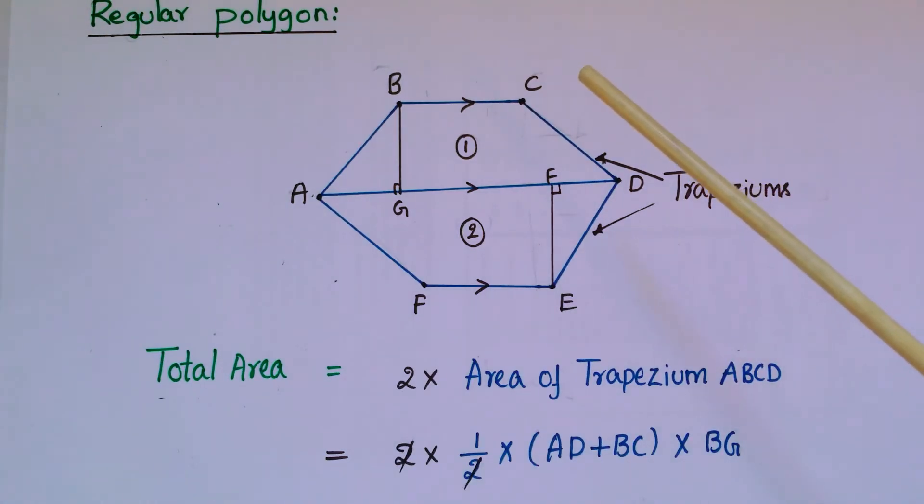Now I am going to tell how to find area of any regular polygon. Here I have taken a hexagon. If you cut this hexagon here, then you will get two trapeziums - equal parts of two trapeziums.